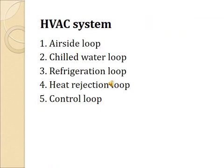The HVAC system consists of five loops: the air side loop, chilled water loop, refrigeration loop, heat rejection loop, and the control loop. We will go through each loop one by one.